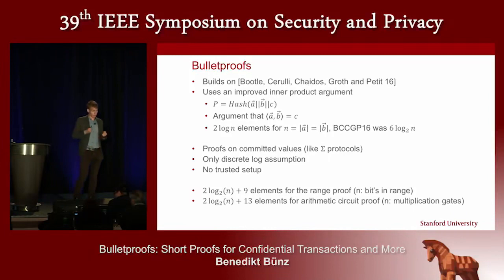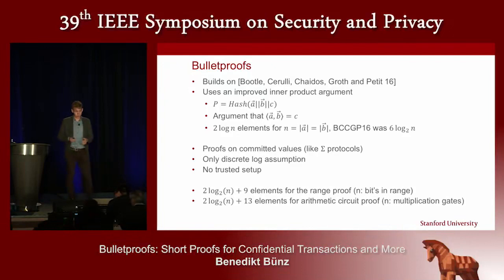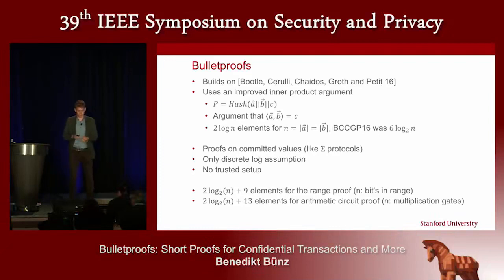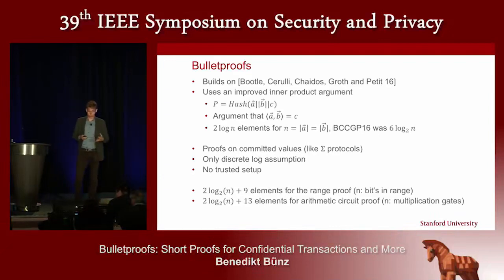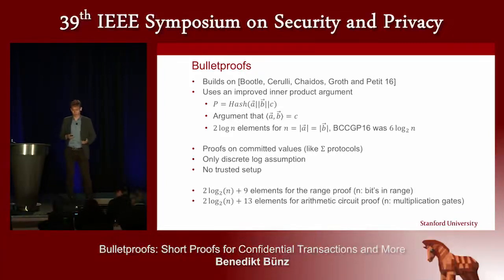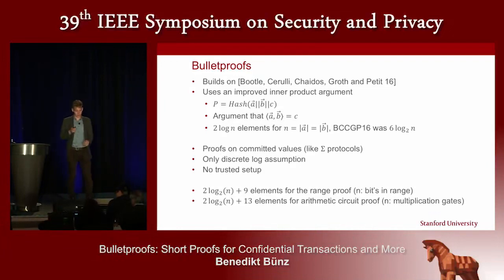Bulletproofs doesn't only work for range proofs — you can do arbitrary proofs for arbitrary functions formulated as arithmetic circuits, meaning circuits with multiplication and addition gates. The proof size also improves from the previous Boodle scheme, and also scales with 2 log n, where n is the number of multiplication gates.